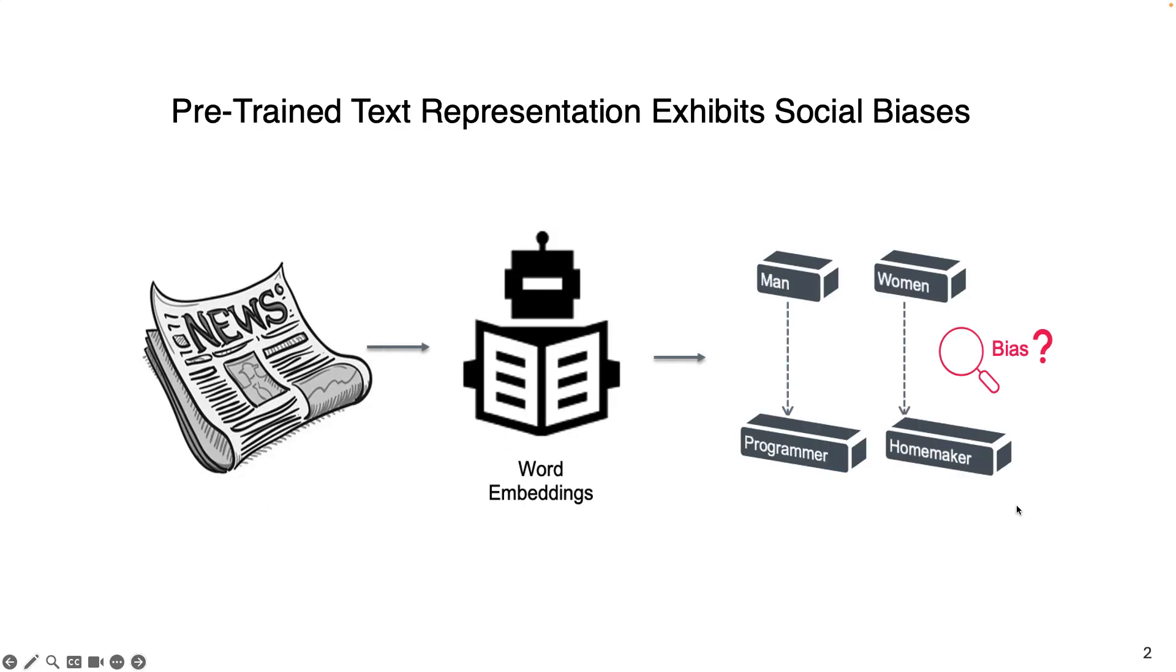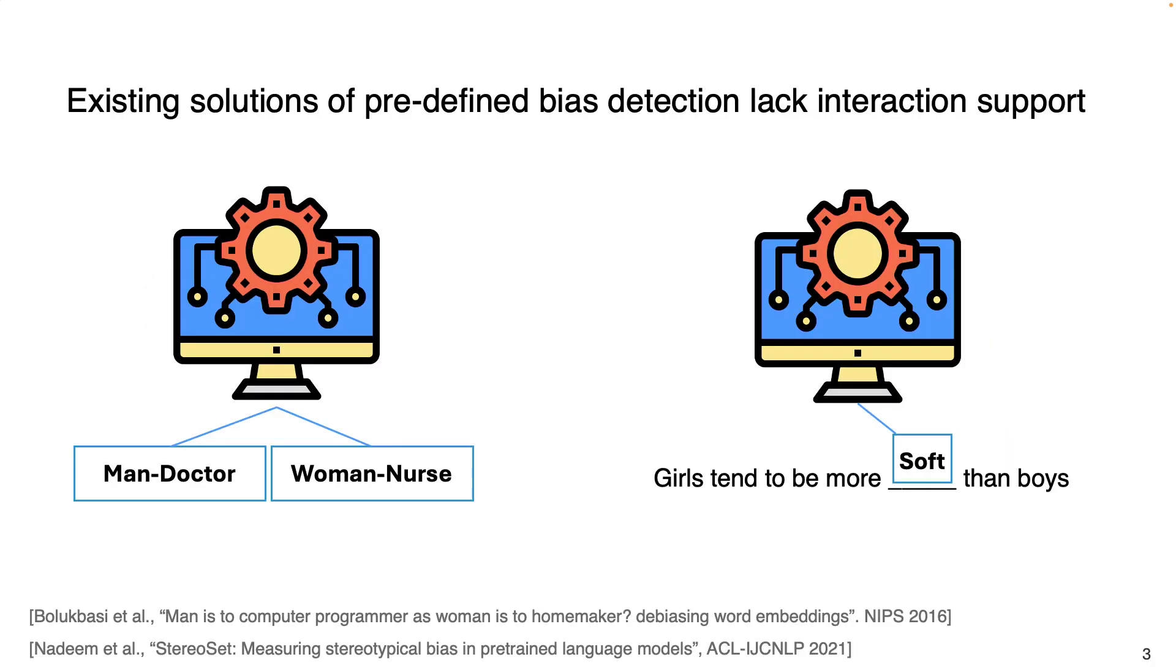Pre-trained text representations, such as word embeddings, are known to show social biases and stereotypes that they learn from the training data. Current algorithms can detect word biases from text representations. However, these solutions are predefined template or word-based. Also, there is no interaction support where users can freely inspect new types of biases or modify definitions for existing biases.